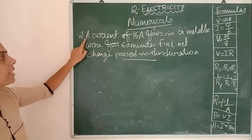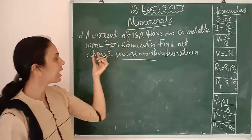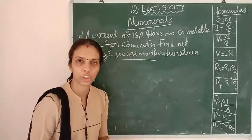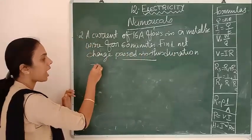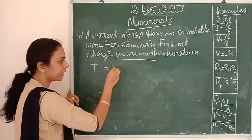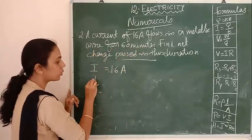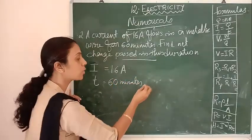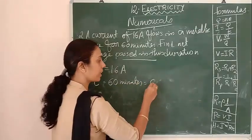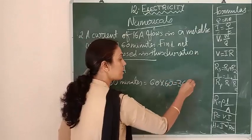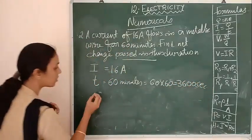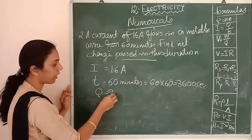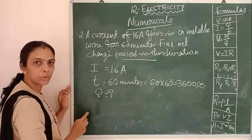The next question: a current of 16 ampere flows in a metallic wire for 60 minutes. Find the net charge passed in this duration. Current I equals 16 ampere. Time is given as 60 minutes. Minutes is not in SI units, so we should convert: 60 into 60 equals 3600 seconds. We need to find net charge Q. What is the relation connecting I, T, and Q?